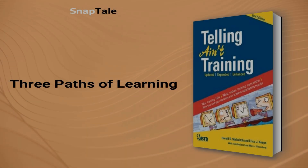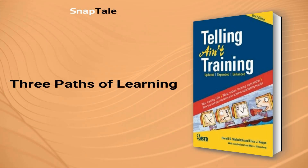Three Paths of Learning: Learning can take three forms — training, instruction, and education. Training produces automatic responses, instruction broadens understanding to adapt to new situations, while education creates broad mental models and value systems. A mix of these approaches can be used for effective teaching. Focusing on learners' needs and concerns makes teaching more effective than simply transmitting information.